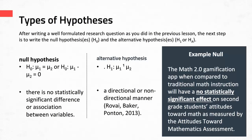Now that you understand the definition of a hypothesis and the function that hypotheses serve, let's talk about the different types of hypotheses you need to write for each one of your research questions. For each of your well-formulated research questions, you need to write at least one null hypothesis, and in some cases, an alternative hypothesis.